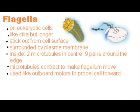Flagella on eukaryotic cells are like cilia but longer. They stick out from the cell surface and are surrounded by the plasma membrane. Inside they're like cilia too — two microtubules in the center and nine pairs around the edge. The microtubules contract to make the flagellum move. Flagella are used like outboard motors to propel cells forward, for example when a sperm cell swims.